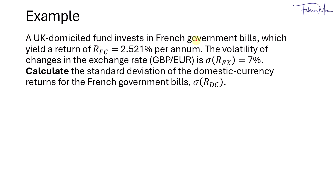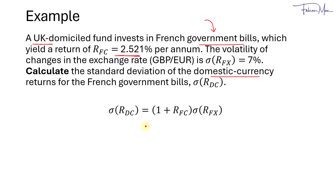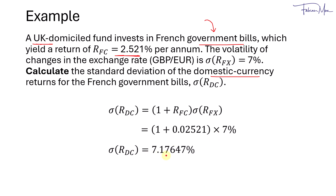A UK-domiciled fund invests in French government bills, which yield a return of 2.521% per annum denominated in euro terms. The volatility of changes in the exchange rate is 7%. Calculate the standard deviation of the domestic currency returns for the French government bills — expressed in British pound terms. Government bills are risk-free assets, so we apply the formula, scaling the exchange rate volatility by the return on the foreign risk-free asset: 1 plus 0.02521, multiplied by 7%, giving 7.17647%, expressed in British pound terms.